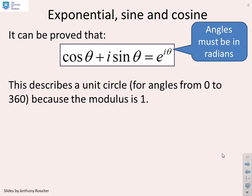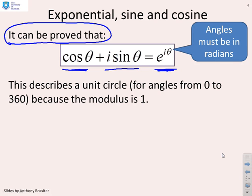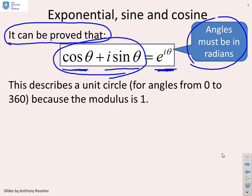It can be proved that cos theta plus i sine theta equals e to the power i theta, and you'll notice this warning: angles must be in radians. So as theta goes from 0 to 360 degrees or 0 to 2 pi radians, then this expression is going to give us the unit circle.